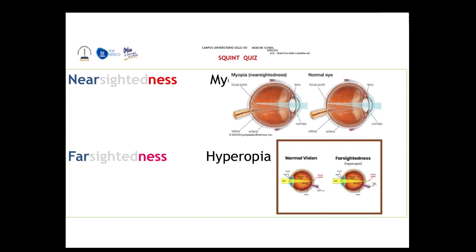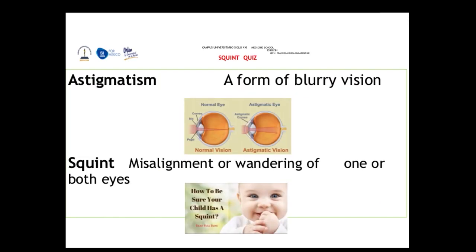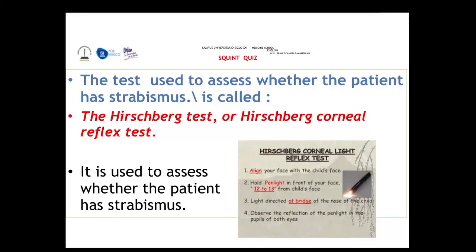Remember the difference between near-sightedness, called myopia, and far-sightedness, called hyperopia. Astigmatism is a form of blurry vision. Squint is the misalignment or wandering of one or both eyes. The test used to assess strabismus is the Hirschberg test, also called the Hirschberg corneal reflex test, which helps determine whether the patient has strabismus.